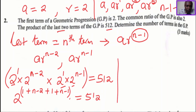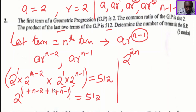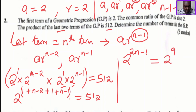After adding the powers — 1 plus 1 plus 1 plus n plus n minus 3 — this gives 2 raised to power 2n minus 1, equals 512. Writing 512 in the form of prime factors of 2, 512 equals 2 raised to power 9.